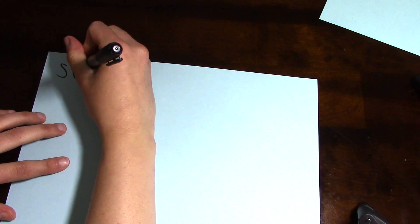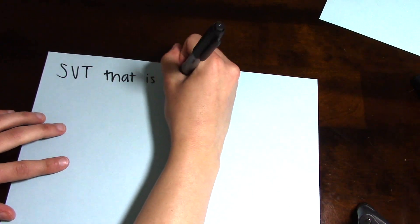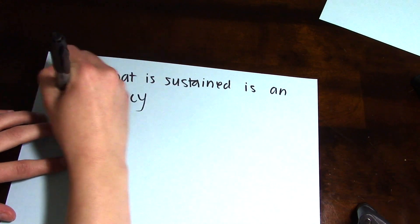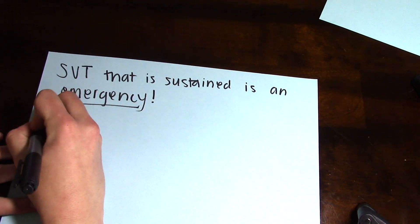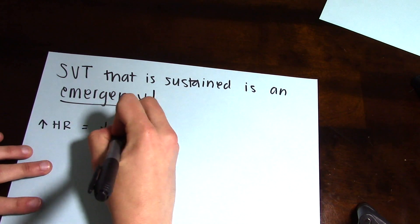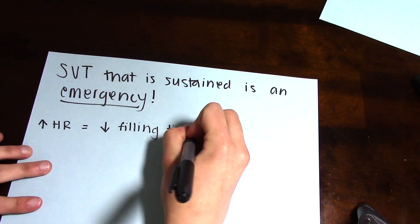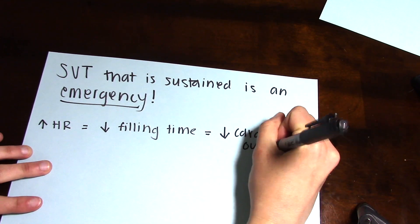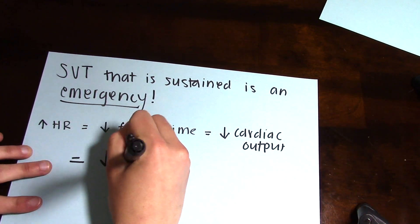SVT that is sustained is an emergency, and this is because the heart cannot sustain this fast rhythm without having symptoms. Because your heart rate is so quick, this causes decreased filling time in the heart, which decreases your cardiac output to the rest of the body, and therefore your blood pressure will be lower as well.